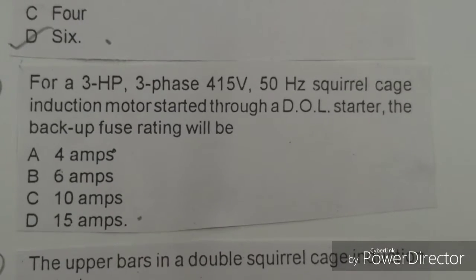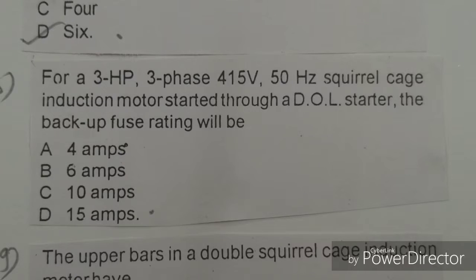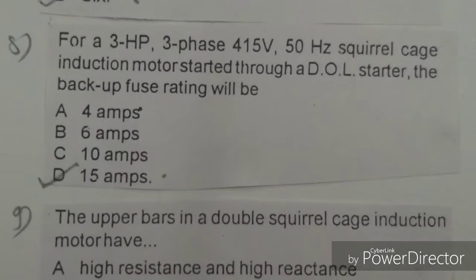Next objective: For a three-phase, 3 HP, 450V, 50Hz squirrel cage induction motor started through a DOL starter, the backup fuse rating will be. Options given: 4 ampere, 6 ampere, 10 ampere, 15 ampere. The right answer is D, 15 ampere. Mark here.